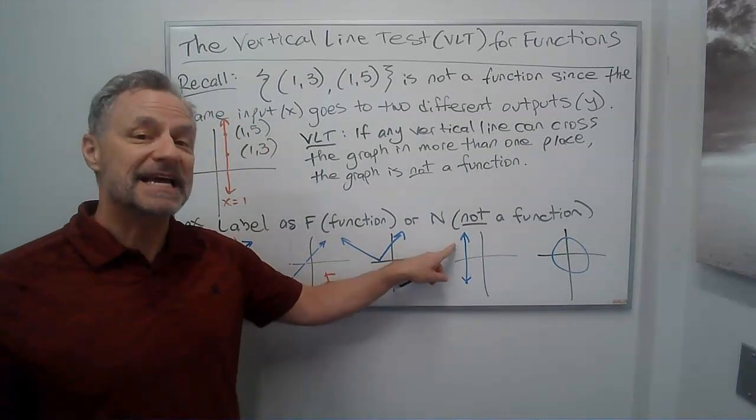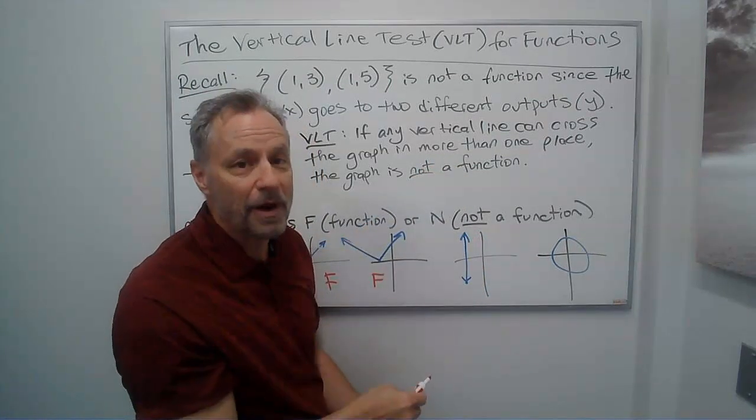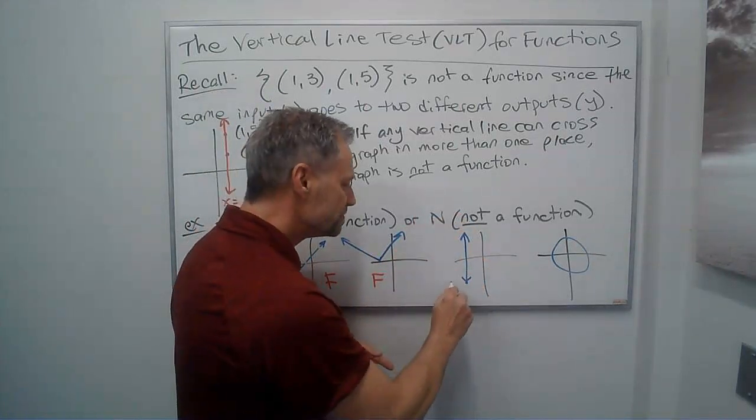This one's actually a vertical line. If I draw this vertical line, it crosses in every single point. So anytime you have a vertical line itself, it's not a function.